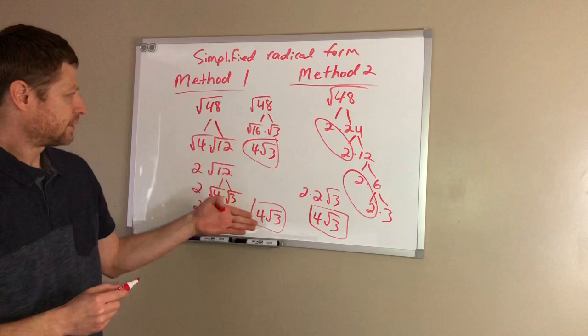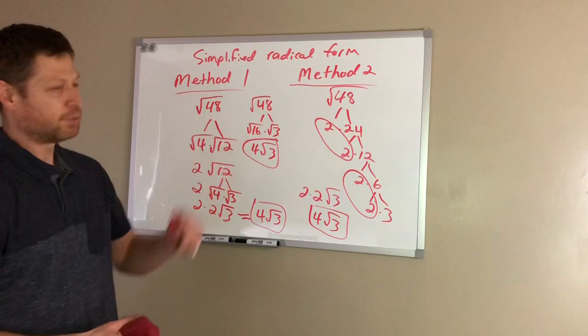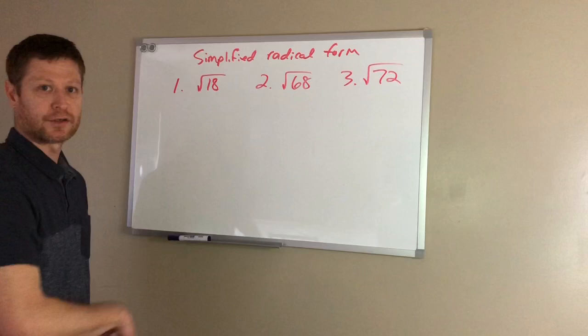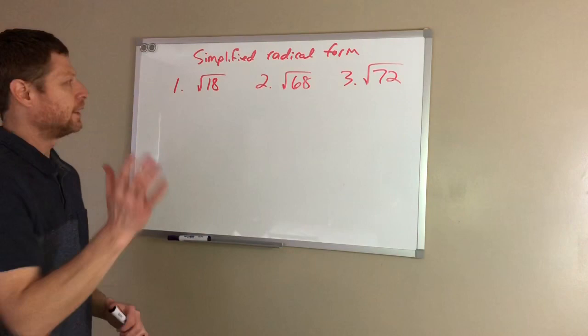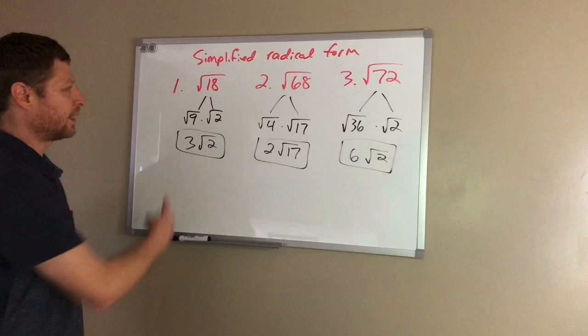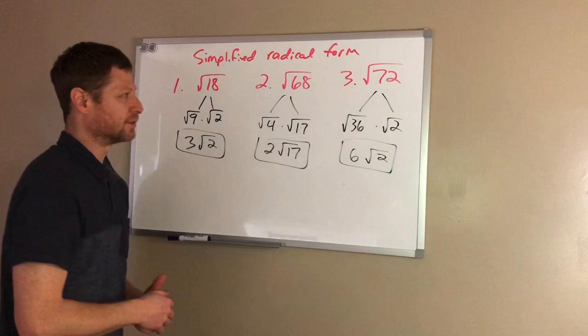So you pick whichever method you think is the best. You could try both and then see which one you feel more comfortable with. I'm going to go ahead and put up some examples here. Okay, here are three examples that I'd like you to try on your own. Choose whatever method you want, or try the three problems, both methods, until you decide which one that you think is your favorite. Pause the video now, and when you come back, push play, I'll have the answers here for you. Alright, welcome back. Here are the three answers using method number 1, since that's the one that I'm most familiar with: 3 square roots of 2, 2 square roots of 17, and 6 square roots of 2. That's it for now. Tomorrow we'll post another video doing the same kind of idea, but with cube roots instead of square roots. See you guys later.